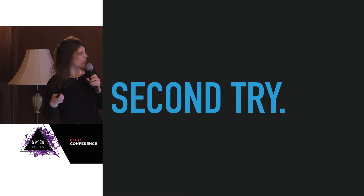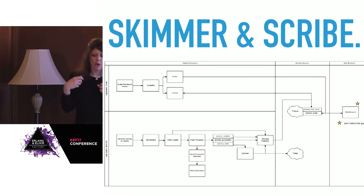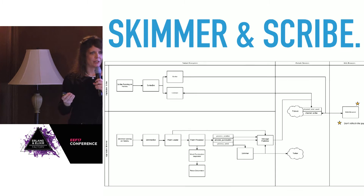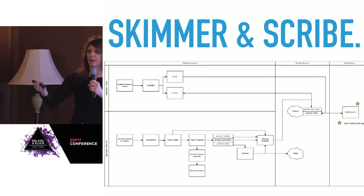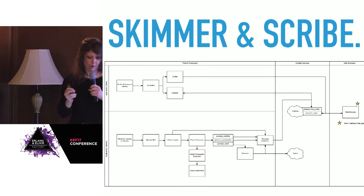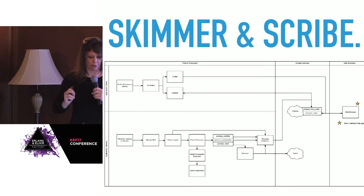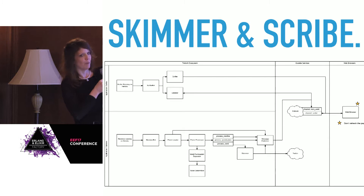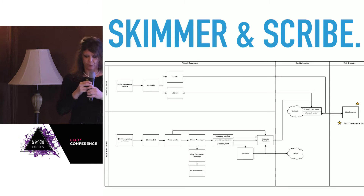I went back to the drawing board again with Ruby and focused on splitting the different behaviors of the domain into their own applications. I thought of it as having two pieces: a skimmer, which would take care of searching and parsing a poem, and a scribe, which would do the writing to the client. I made two small, independently-running applications and ran them up on Heroku.